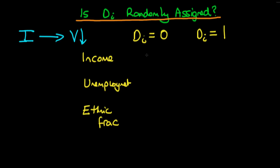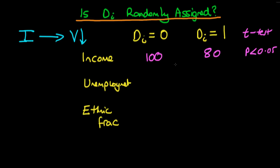We might find that the level of income in those states or districts which didn't receive infrastructure spending is 100, whereas for those that did it might only be 80. We could then do a simple t-test of means to compare whether these two sample means imply that there is actually some difference between the two groups in terms of mean income. If we found a p-value less than 0.05, we might conclude at the 95% confidence level that there was a difference in income between the two regions, and the difference in violence might actually reflect that income difference rather than an actual treatment effect.